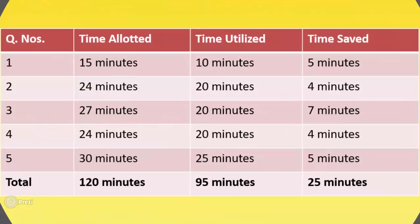Question number 3: 27 minutes have been allotted, we will utilize 20 minutes, saving 7 minutes. Question number 4: 24 minutes have been allotted, 20 minutes is the time utilized, saving 4 minutes. Question number 5: 30 minutes have been allotted and time utilized would be 25 minutes, saving 5 minutes. So, we have the total time allotted as 120 minutes, time utilized would be 95 minutes, and we will save 25 minutes.